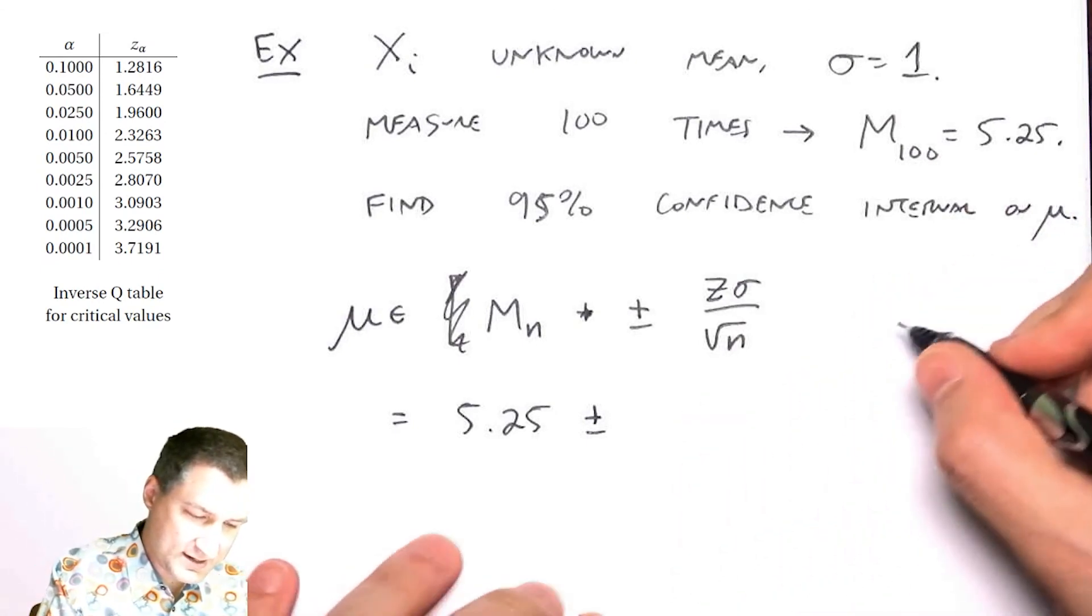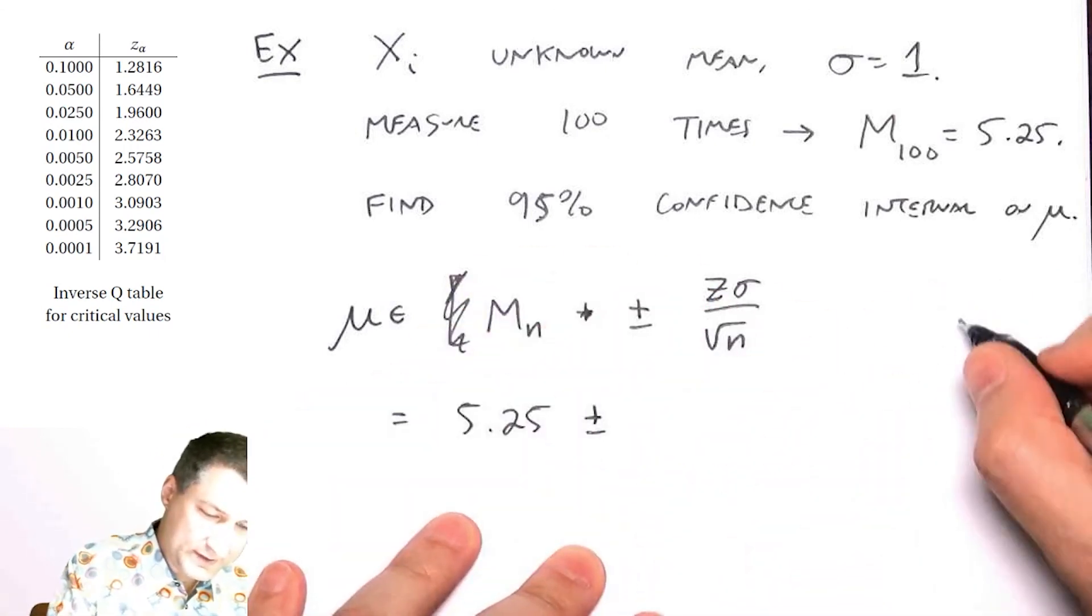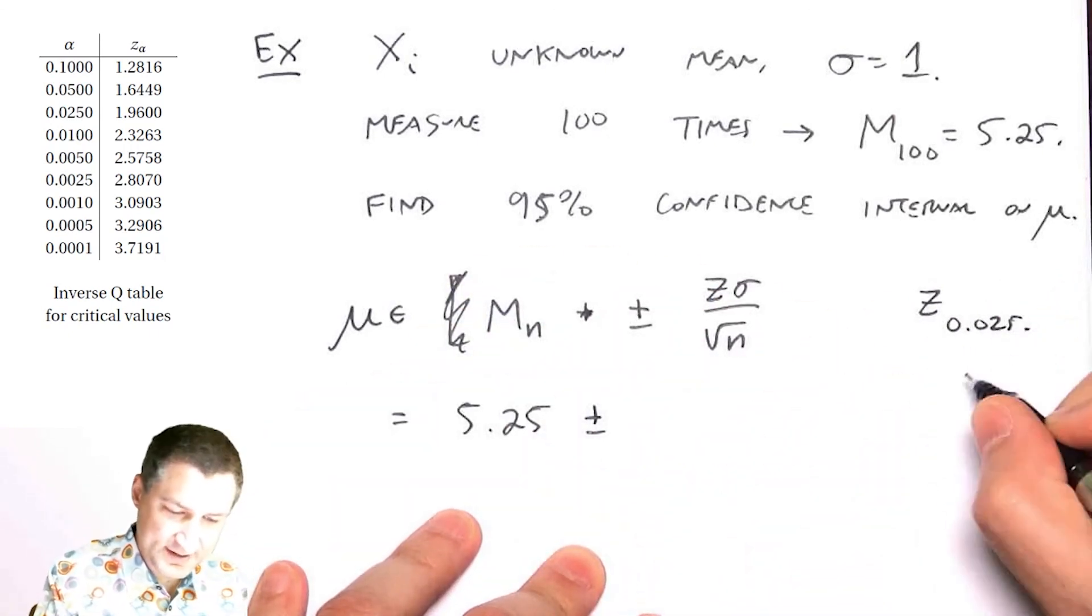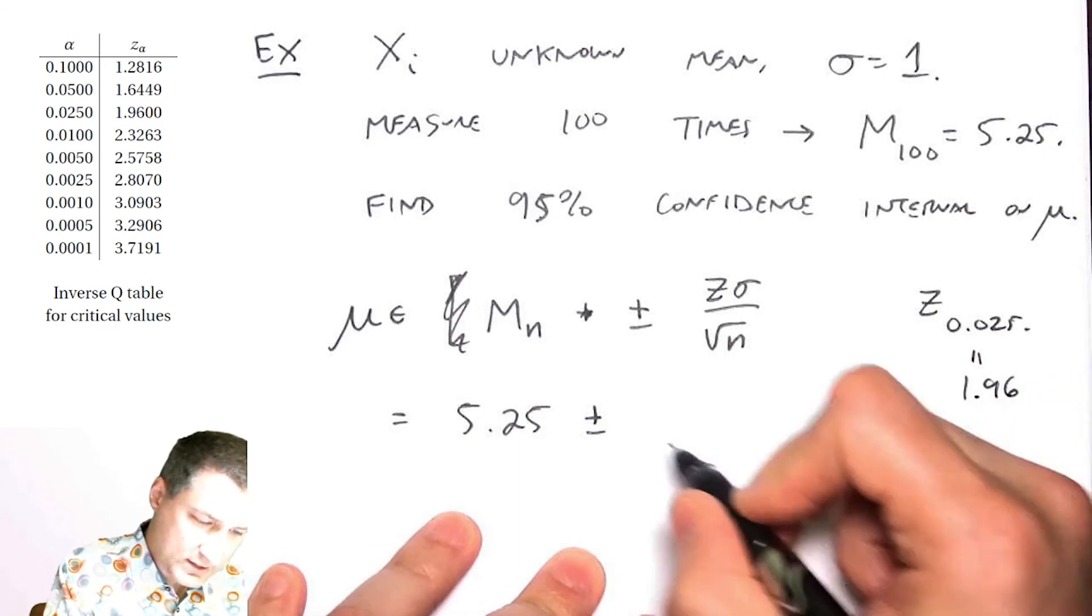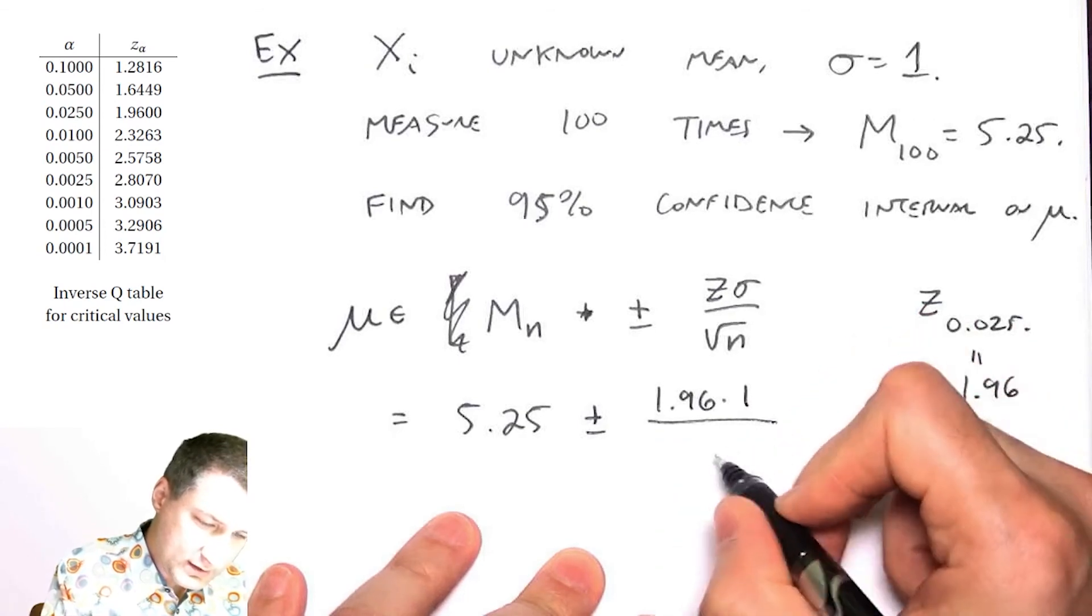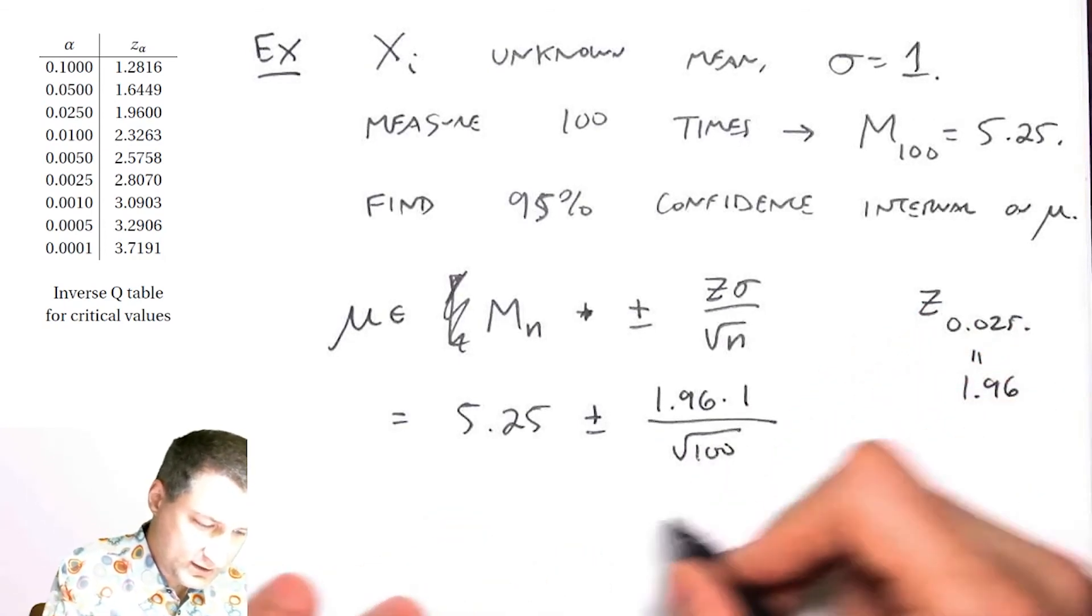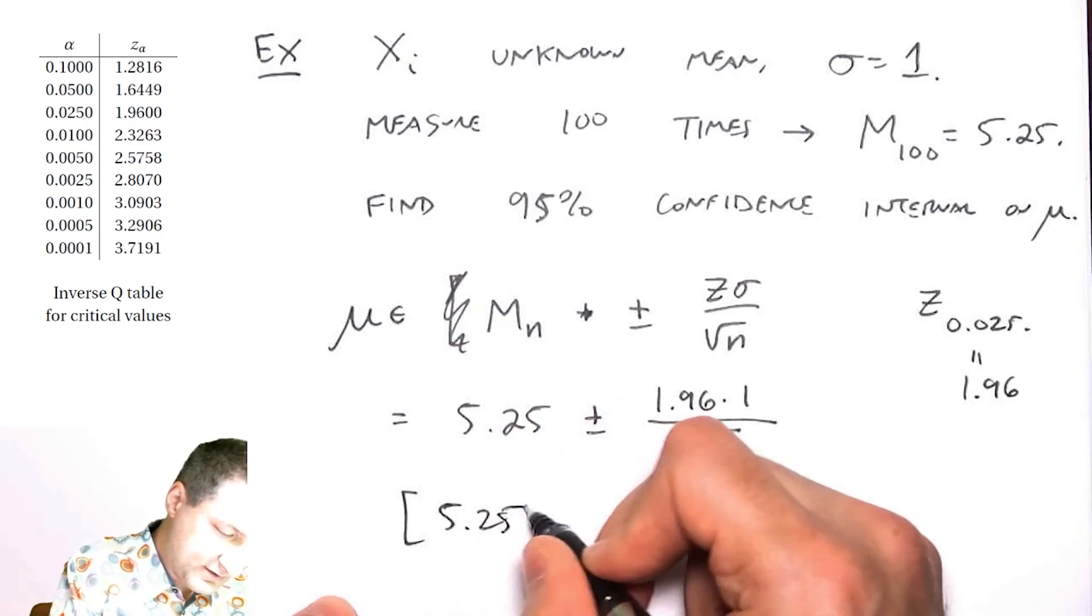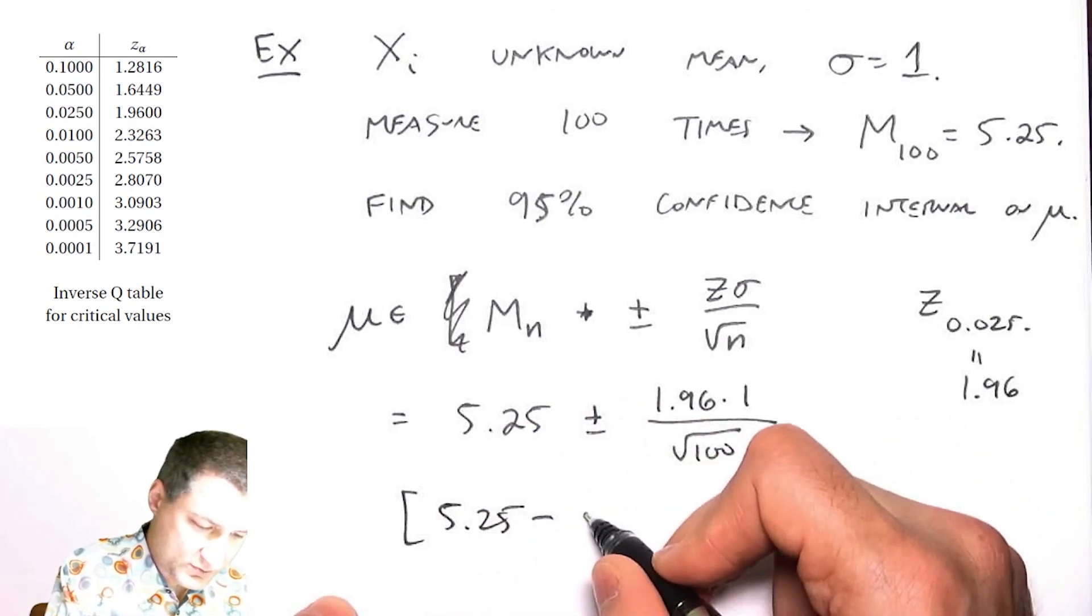So z = 1.96, σ = 1, and √n = √100 = 10. My confidence interval is 5.25 minus whatever this number is, which is basically 0.2.